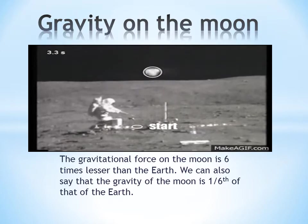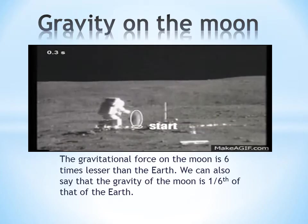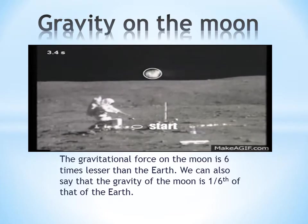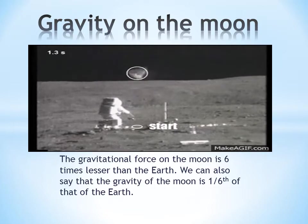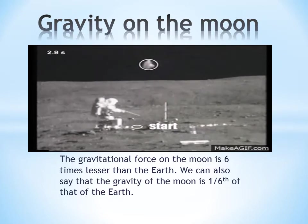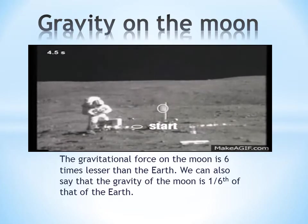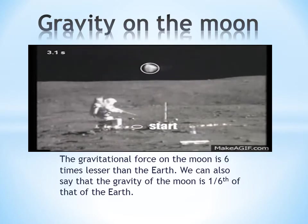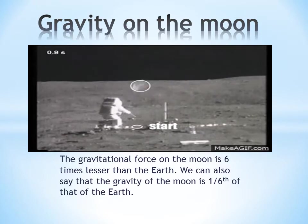Why did the rock come back down? Why is the astronaut standing on the moon? Very simple — this proves that there is gravity on the moon. Those of you who thought there is no gravity on the moon, here is the proof. There is gravity on the moon.